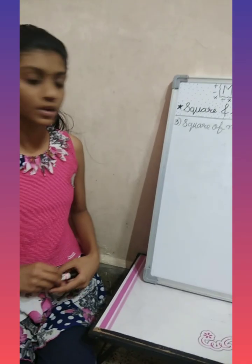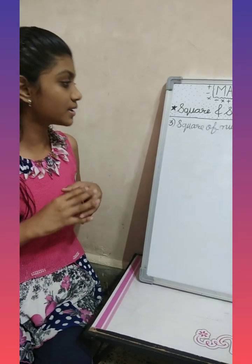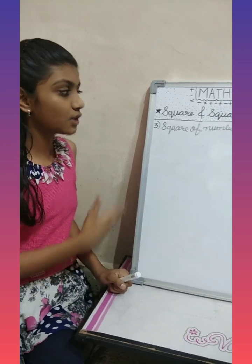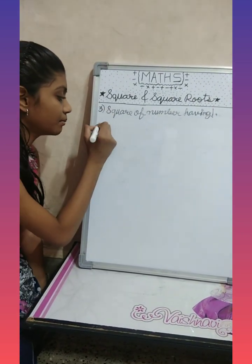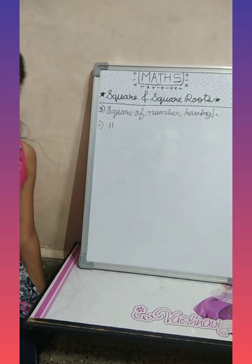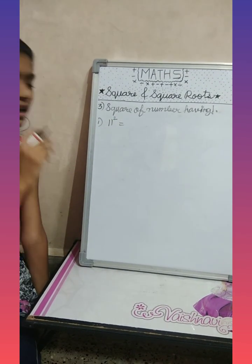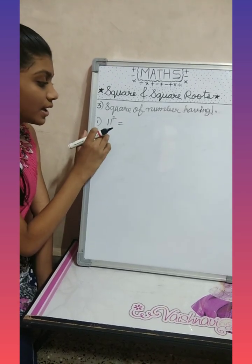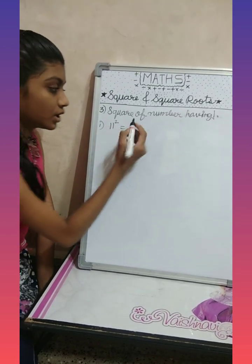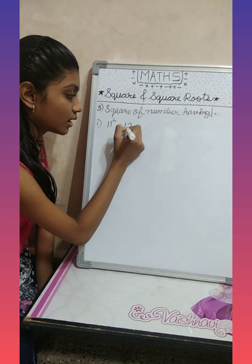Now let's see the next trick for taking out square of numbers having one. Let's take one example: eleven square. Eleven square has two ones, so we will write one and two, and then one, two, and again one.